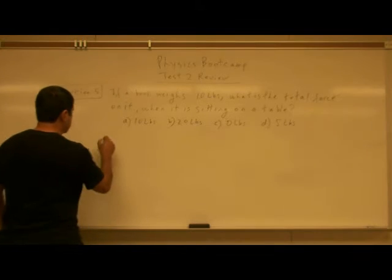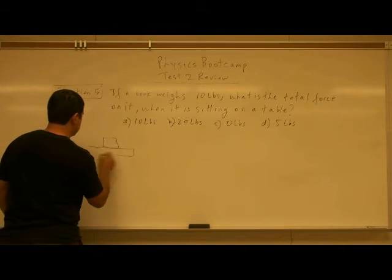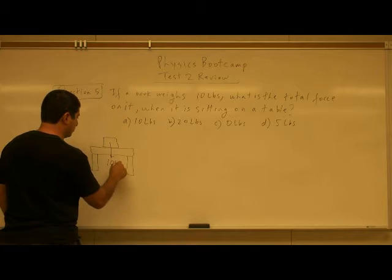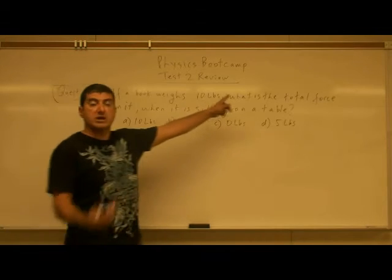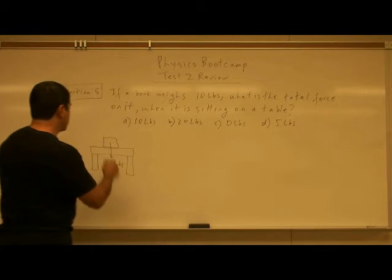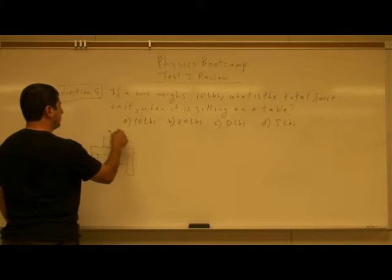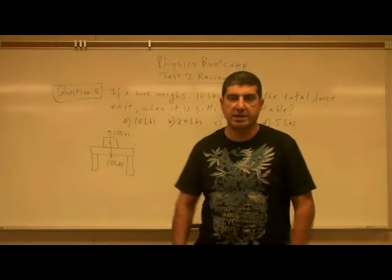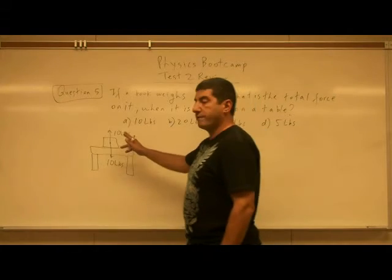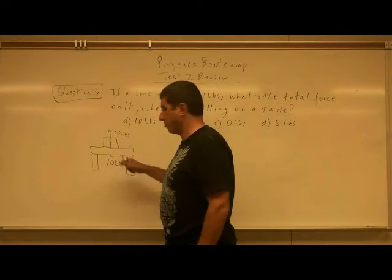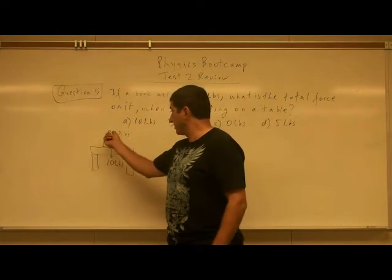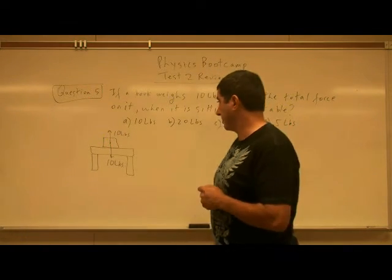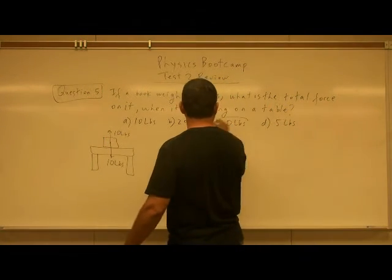What's happening? When the book is sitting on a table, gravity is pushing it down with 10 pounds — that's the weight. The table is pushing it up with 10 pounds. That's why it's not moving — it's not accelerating. So the total force on it is 0: 10 minus 10. We call this the normal force, the table pushing up on the book. So the total force on it is 0 pounds.